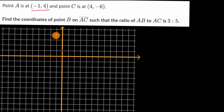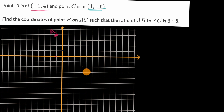So that right over there is point A. And then let's think about point C, which is at four comma negative six — four across and negative six down. Just like that.